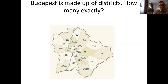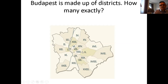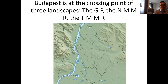Budapest is made up of districts — there are 23 of them. The last one joining the city was Soroksár back in the 1990s only, and probably there will be some newer districts in the next couple of decades. The school is right here in District 2. Some districts are rather big in size, some are smaller. I would be happy if you could find which districts are the three biggest ones concerning size and population — where can you find the most people in Budapest?